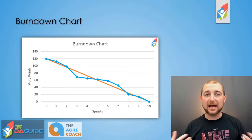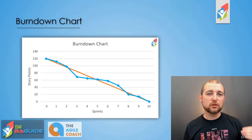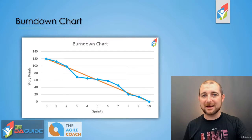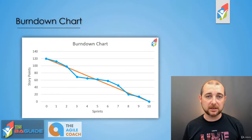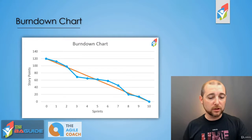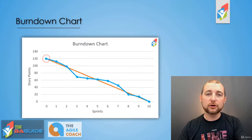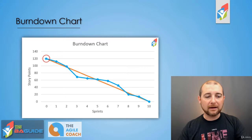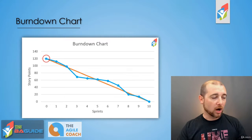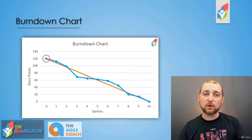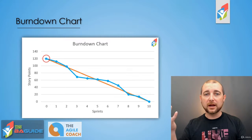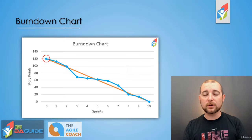The blue line is the actual — this is the work that's left remaining after each sprint is completed. As we look at sprint zero, we're at 120 story points. Obviously, we haven't done any work yet, so 120 points are part of the project and 120 story points still need to be completed.